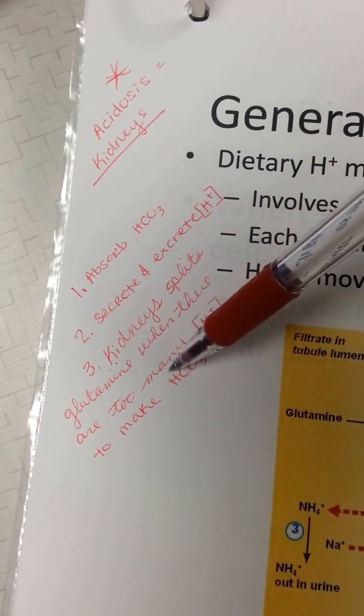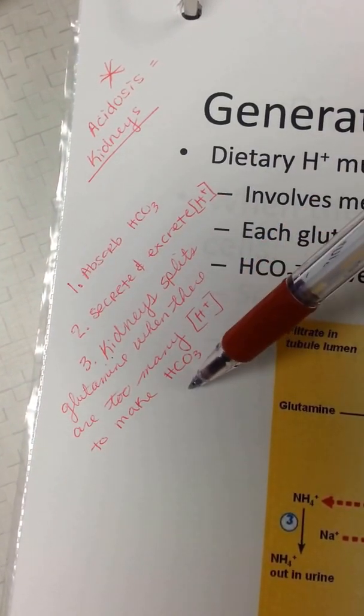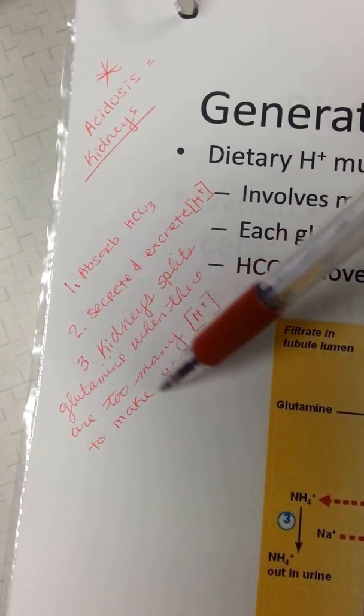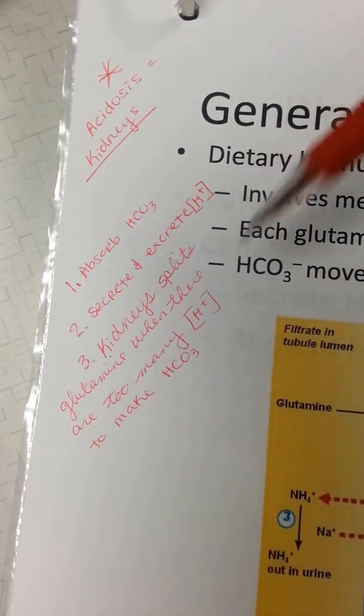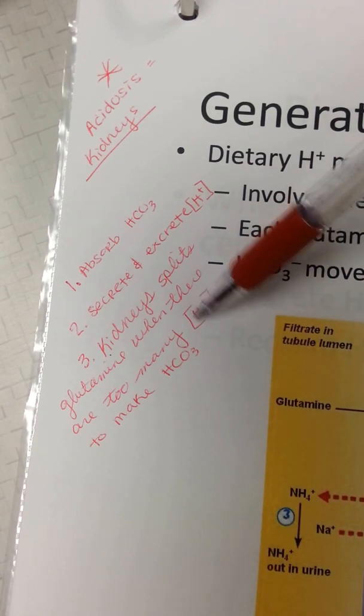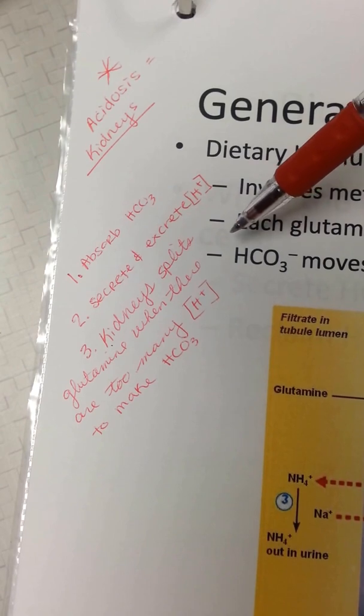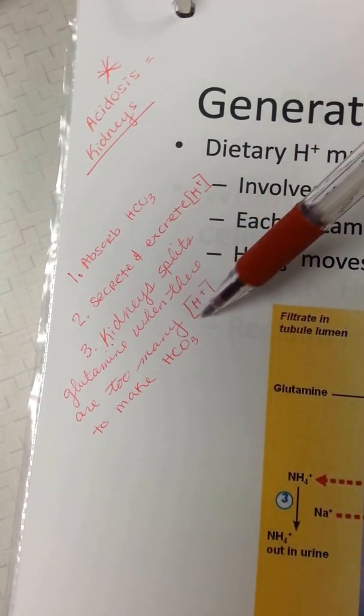Kidneys split glutamine when there are too many hydrogen to make bicarbonate, because more bicarbonate equals attachment of hydrogen.